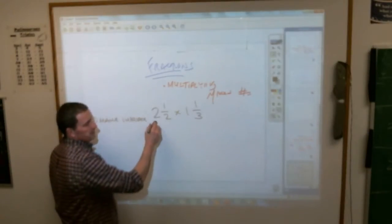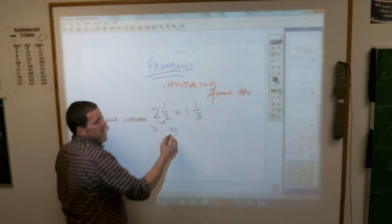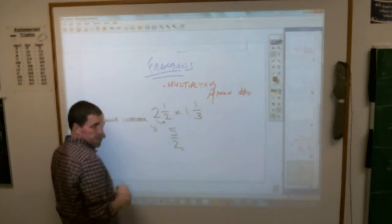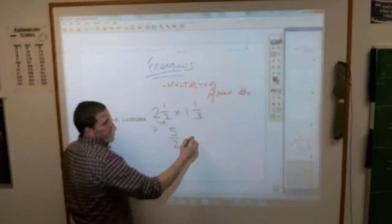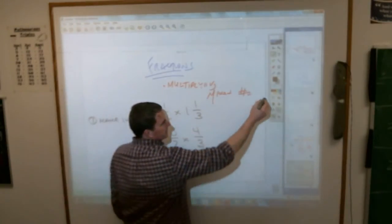First thing you do is make them improper, which means two times two is four, plus one—this becomes 5/2. One times three is three, plus one is four—this becomes 4/3. Step number one.